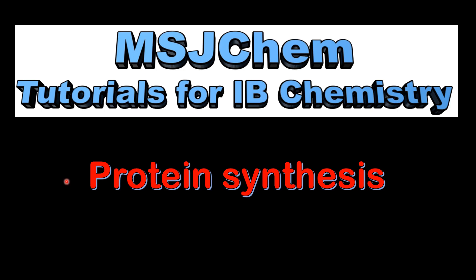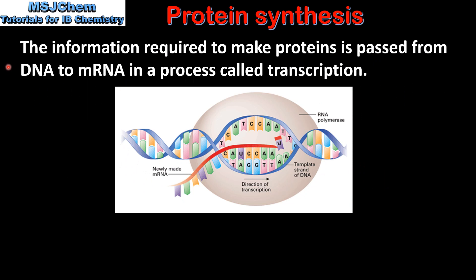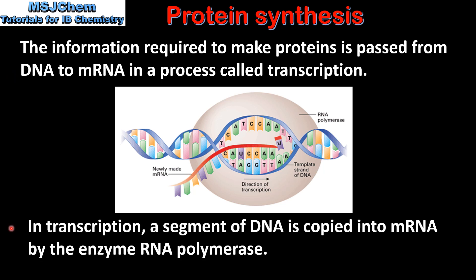This is MSJChem. In this video I'll be looking at protein synthesis. The information required to make proteins is passed from DNA to mRNA in a process called transcription. In transcription, a segment of DNA is copied into mRNA by the enzyme RNA polymerase.